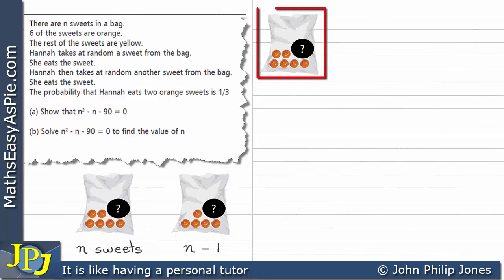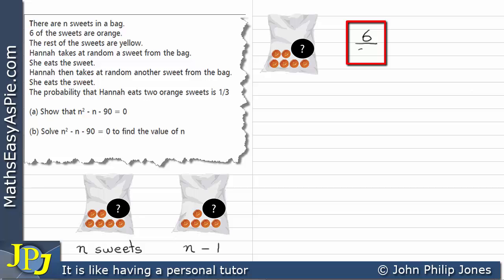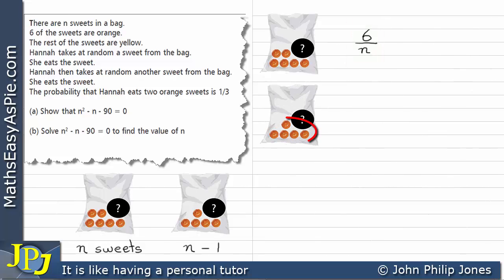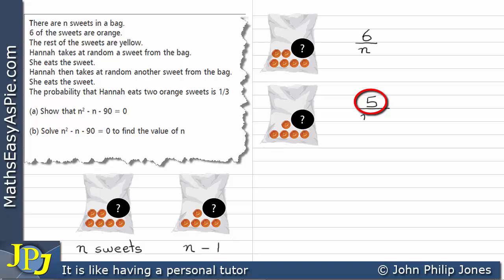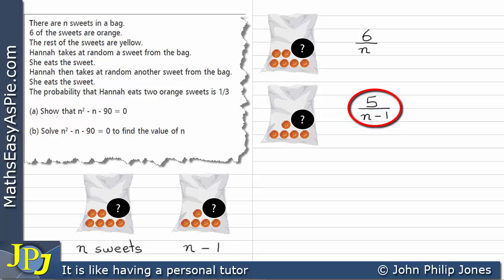The chance of taking an orange sweet from the first bag equals the number of orange sweets in the bag — which is six — divided by the total number of sweets in the bag, which is N. So the probability of the first selection being orange is 6 over N. The second bag now only has five orange sweets in it, so we need to work out the probability of Hannah taking an orange sweet from that bag.